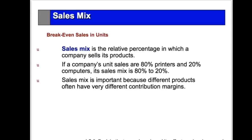In the last chapter we learned how to do breakeven for companies that produce and sell only one product. Most companies sell more than one product, so we have to bring in the idea of breakeven using the idea of sales mix. Sales mix is that relative percentage in which the company sells its products. If a company's unit sales are 80% printers and 20% computers, its sales mix is 80-20, and this is important because different products have different contribution margins.